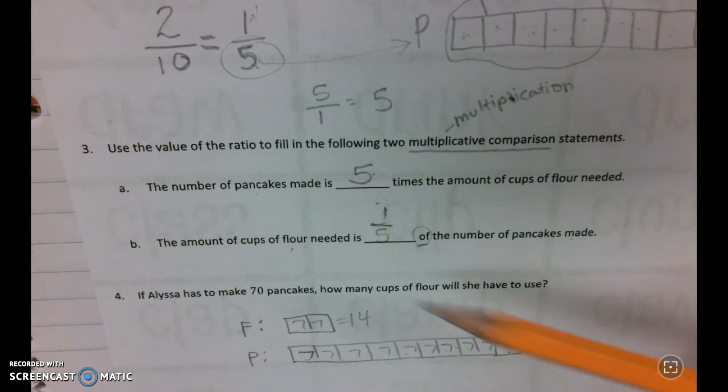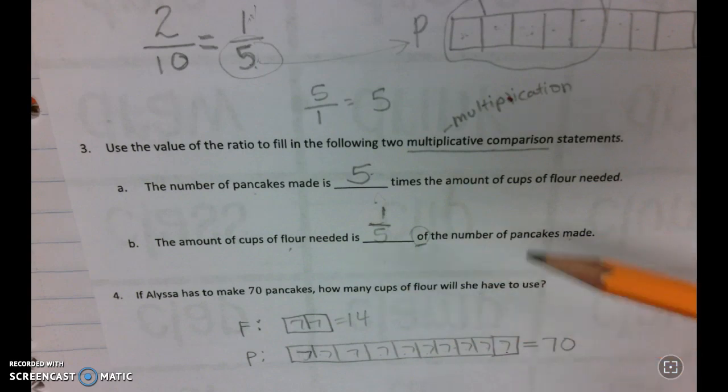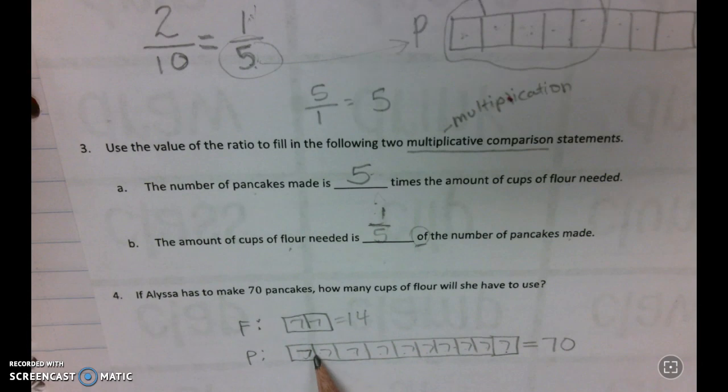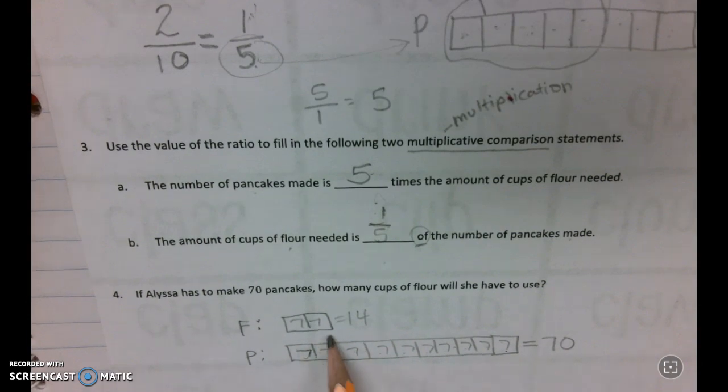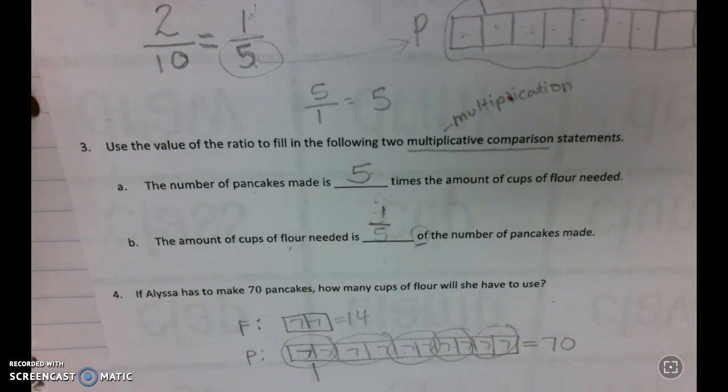Another way to think about it with the one-fifth multiplicative comparison: how much flour do we need per pancakes? We need one-fifth of flour compared to the pancakes. So if we break this into five equal groups and then we take one of those, that would be our amount of flour that we need.